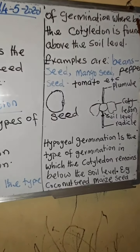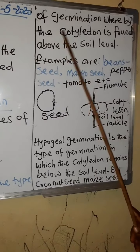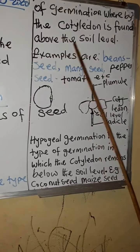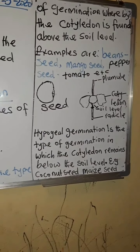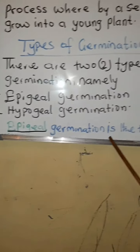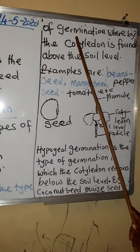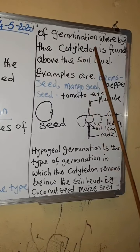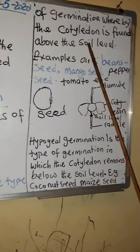Epigeal germination is a type of germination whereby the cotyledon is found above the soil level.